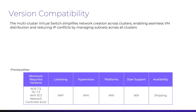The multi-cluster virtual switch requires version 7.3 for AOS and PRISM Central, along with network controller version 6.0.0. This feature is included with Starter, Pro, and Ultimate licensing and is supported on all hardware platforms running the AHV hypervisor.